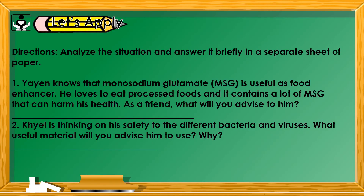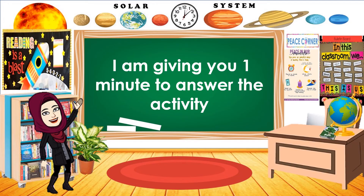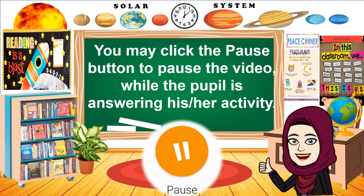Let's apply. Directions: Analyze the situation and answer it briefly in a separate sheet of paper. Read carefully and analyze the situation before answering. Number one: Yaya knows that monosodium glutamate (MSG) is useful as a food enhancer. He loves to eat processed foods, and it contains a lot of MSG that can harm his health. As a friend, what will you advise him? Examples of MSG are Namnam, Ajinomoto, and Magic Sarap. Number two: Kayao is thinking about his safety from different bacteria and viruses in their surroundings. What useful material will you advise him to use and why? Are you ready? I'm giving you one minute to answer the activity.